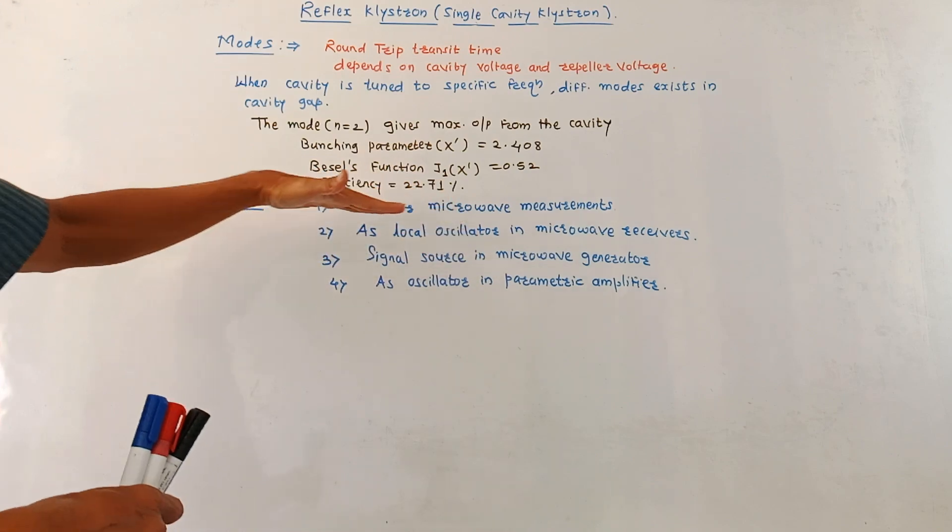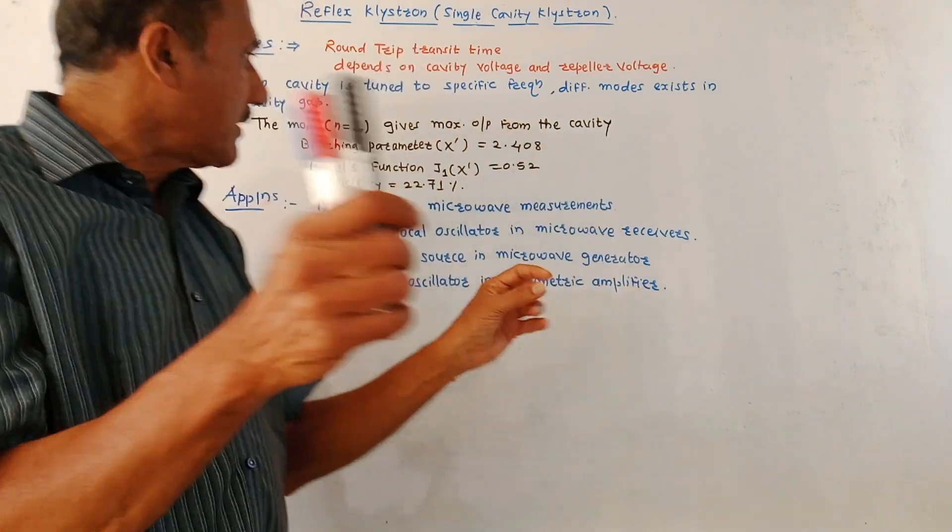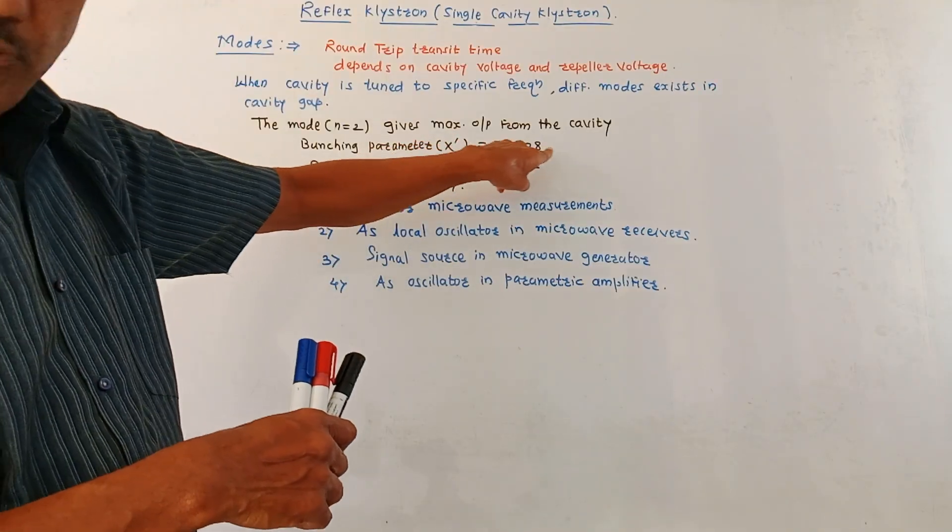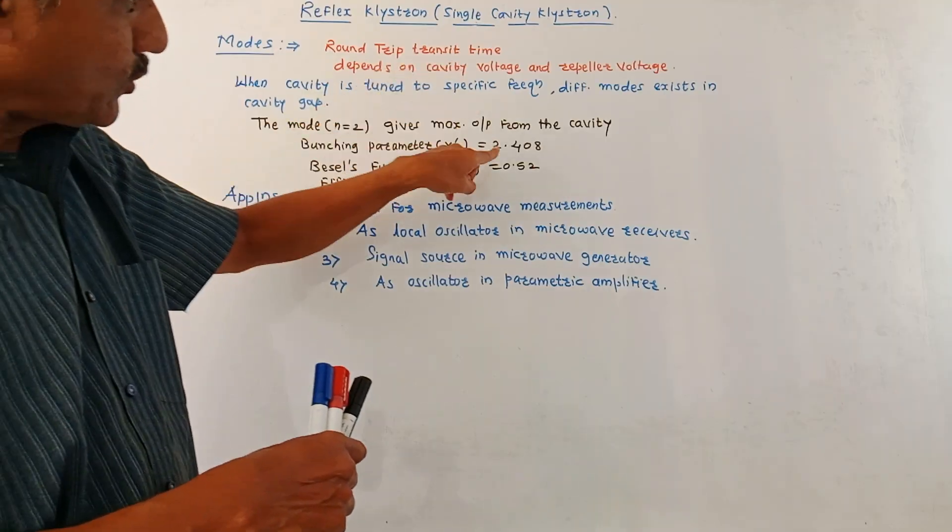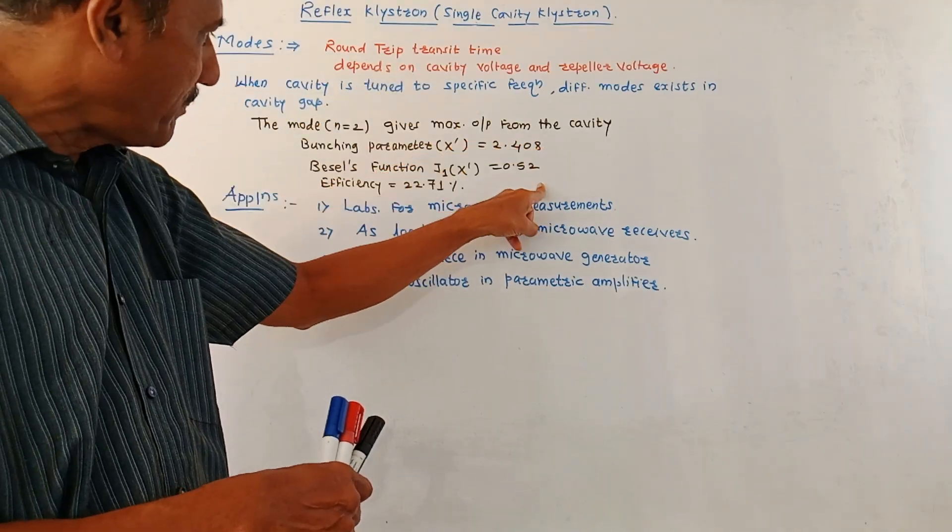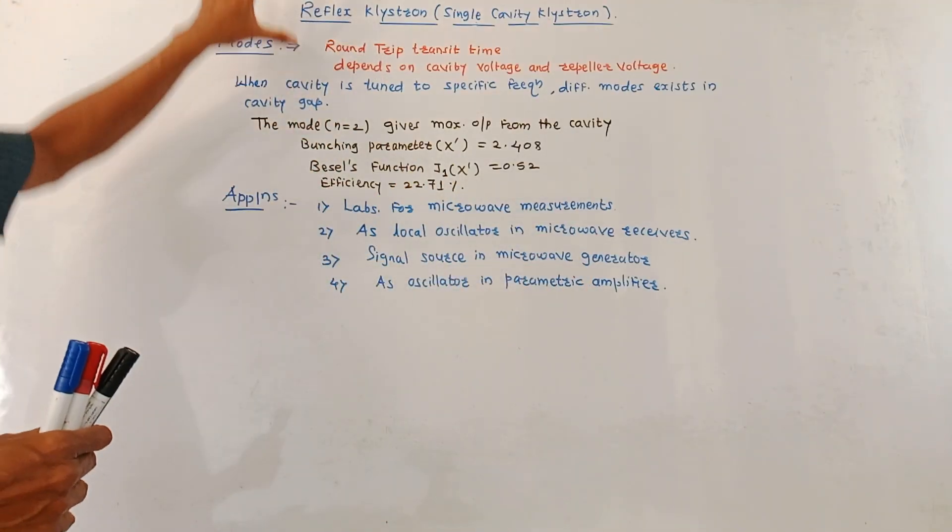That is denoted by x dash which is 2.408, then the Bessel's function corresponding to this bunching parameter is 0.52, and in this case efficiency is 22.71%.